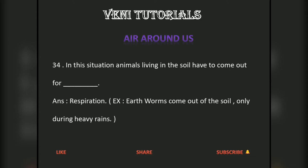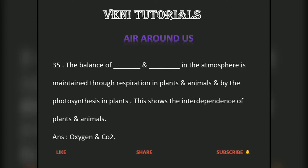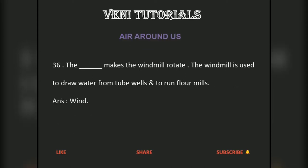The balance of oxygen and CO2 in the atmosphere is maintained through respiration in plants and animals and by the photosynthesis in plants. This shows the interdependence of plants and animals.